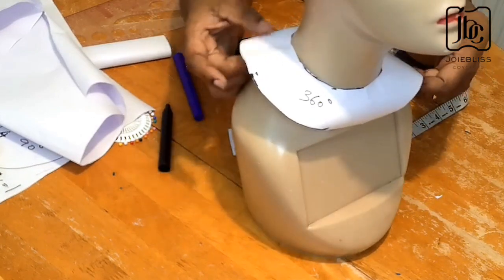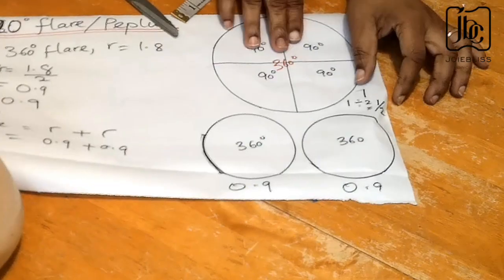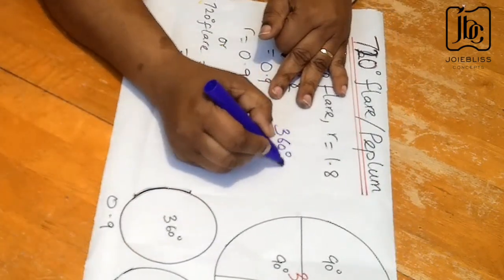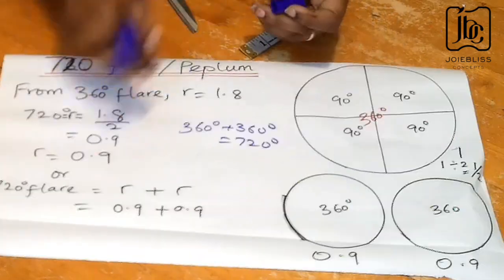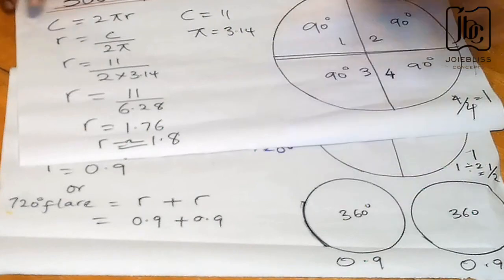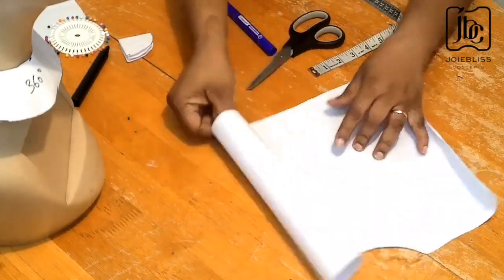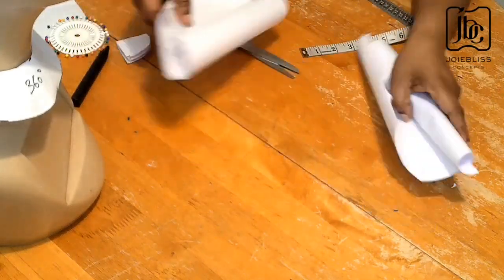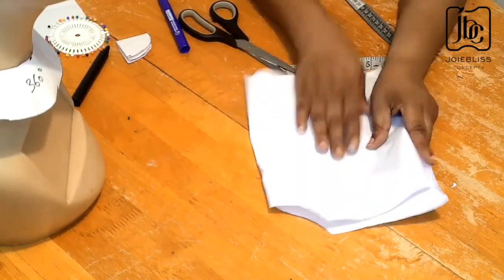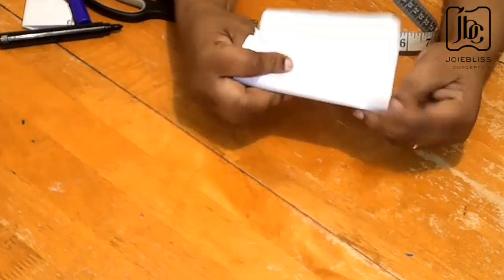If you can follow this method you won't have any issues cutting out any kind of flare. Now let me explain how to cut out a 720-degree flare. A 720-degree flare is two circles put together — 360 plus 360 degrees. Going back to the radius I calculated for the 360-degree flare, which was about 1.8, I'll divide it by two so that each circle has a radius of 0.9. The two circles together give the 720-degree flare. I'll be using two separate fabric pieces, folding each into four.